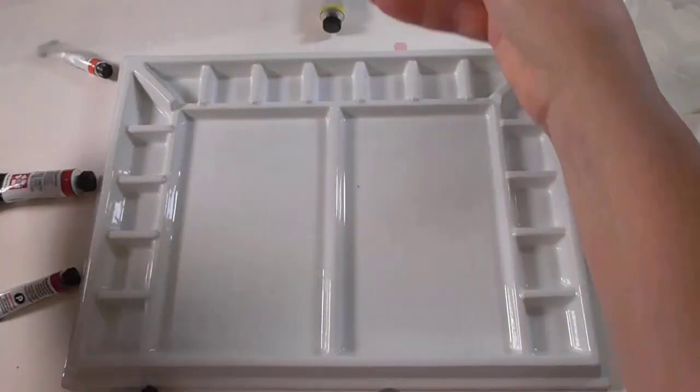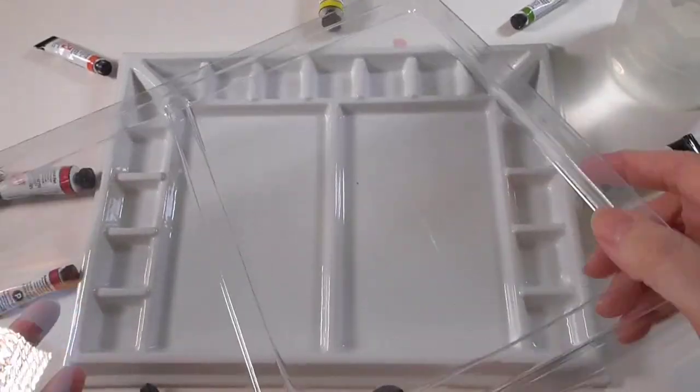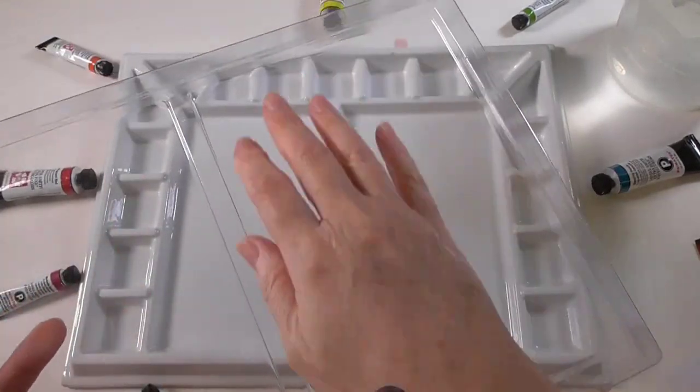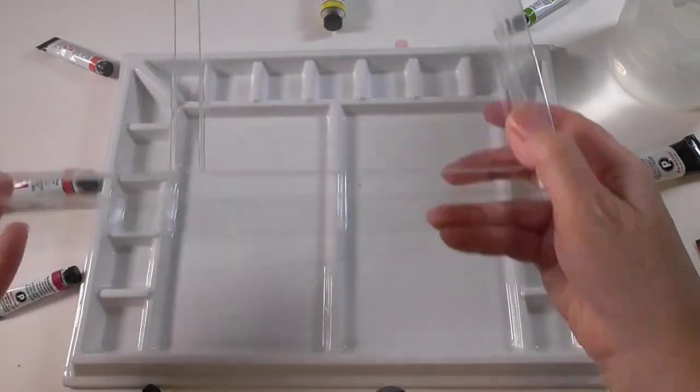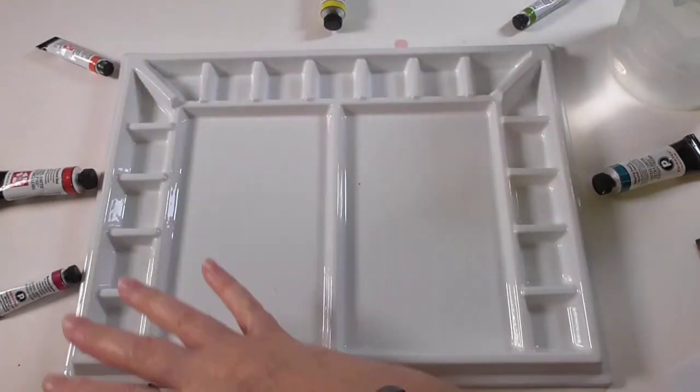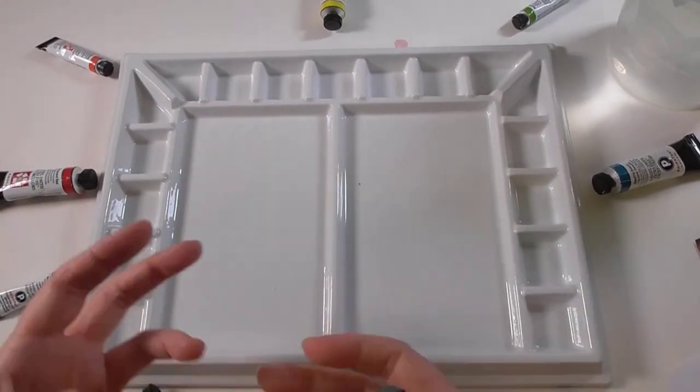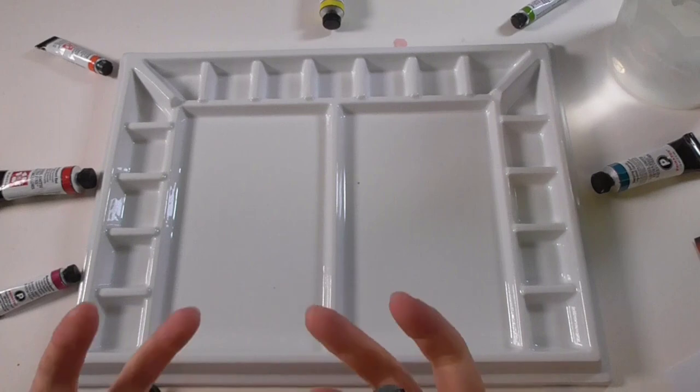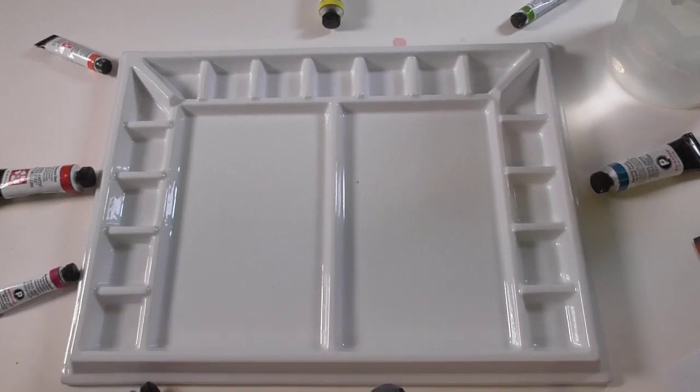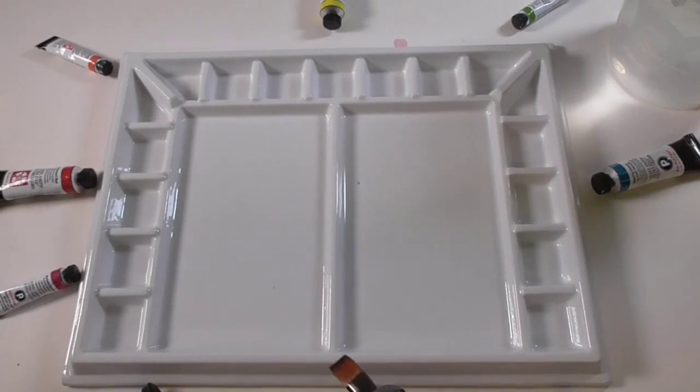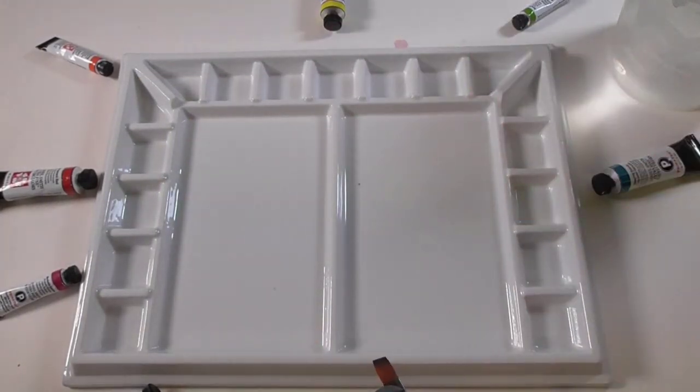I'll take the lid off. The lid also serves as an extra mixing area because you've got two whopping big mixing areas there as well. What I did before I went on camera, I wiped this down with some soapy water just to check there was no residual film or something on it from the manufacturing process. So it's nice and clean. As I mentioned there's 19 wells so plenty of room for color and two big mixing areas in the middle.